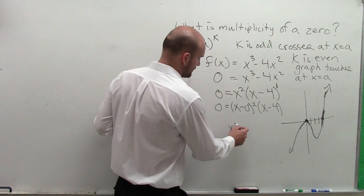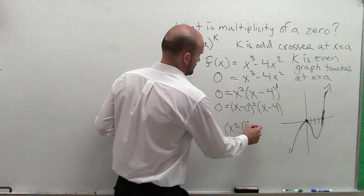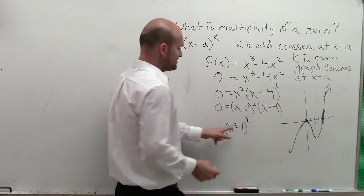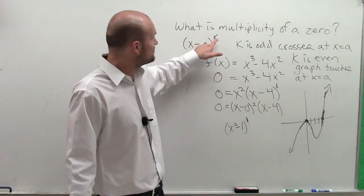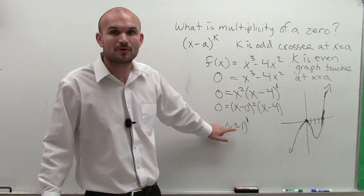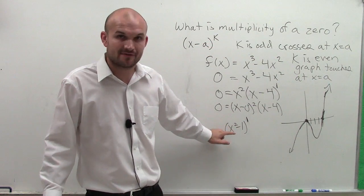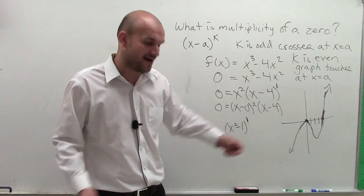One quick note: this factor has a multiplicity of 1. Multiplicity is the exponent of your factor, not the exponent inside a factor. It's the exponent of your factor.